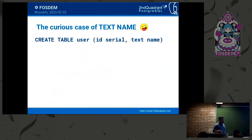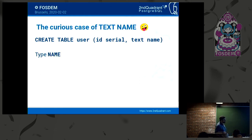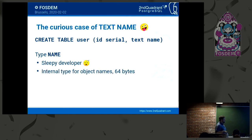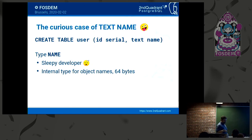One final gotcha: the curious case of 'text name.' I found code like CREATE TABLE (user_id serial, text name). Wait — that is type 'name,' and it appears to work fine. But instead of typing column named 'name' of type 'text,' they typed column named 'text' of type 'name.' That is an internal Postgres type that stores strings but only up to 64 bytes. You'll have nasty surprises if you use type name for your text — so don't be sleepy when you're creating tables.